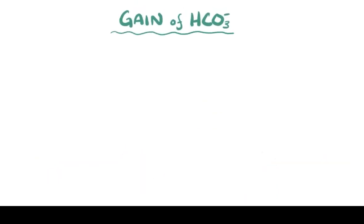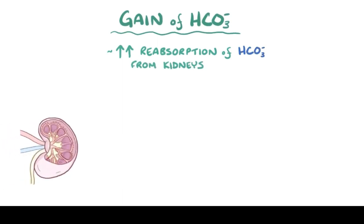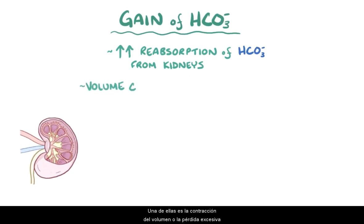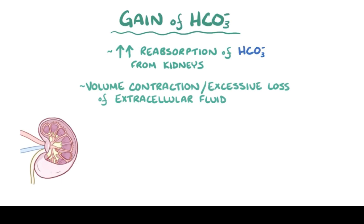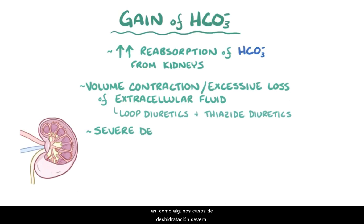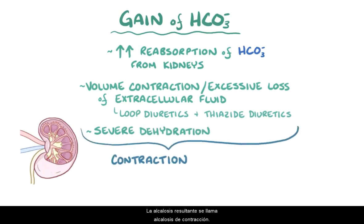The second cause, a primary gain of bicarbonate, is usually caused by an increased reabsorption of bicarbonate from the kidneys. There are various things that could stimulate the kidneys to do this. One of them is volume contraction, or excessive loss of extracellular fluid, which can happen with loop diuretics and thiazide diuretics, as well as in cases of severe dehydration. The resulting alkalosis is called a contraction alkalosis. Sometimes dehydration happens in combination with other causes of metabolic alkalosis, like prolonged vomiting.